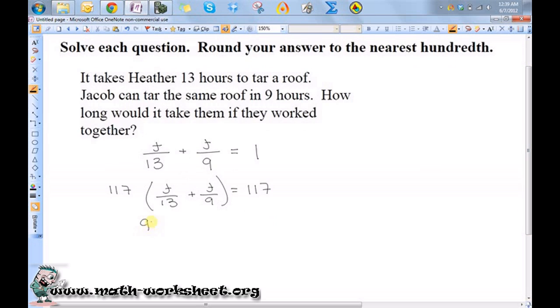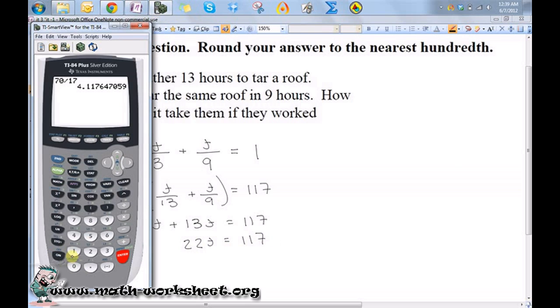So that means 9t plus 13t equals 117. So 22t equals 117, and I need to divide both sides by 22.